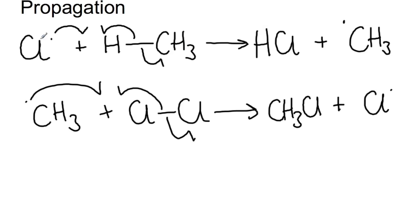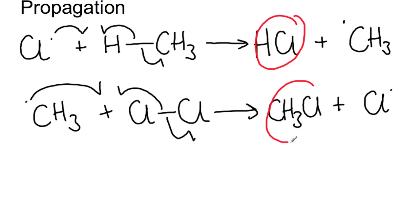As you can see, we have one radical going into the reaction and one radical coming out. This means that the radicals produced can carry on the reaction and cause the chain reaction. We've also produced two products here: HCl and CH3Cl, which were the products we were looking at in the full reaction.